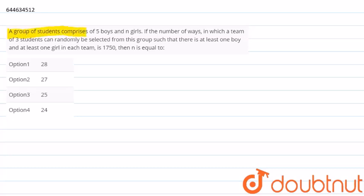A group of students comprises of five boys and n girls. If the number of ways in which a team of three students can be randomly selected from this group such that there is at least one boy and at least one girl in each team is 1750, then we need to find the value of n.